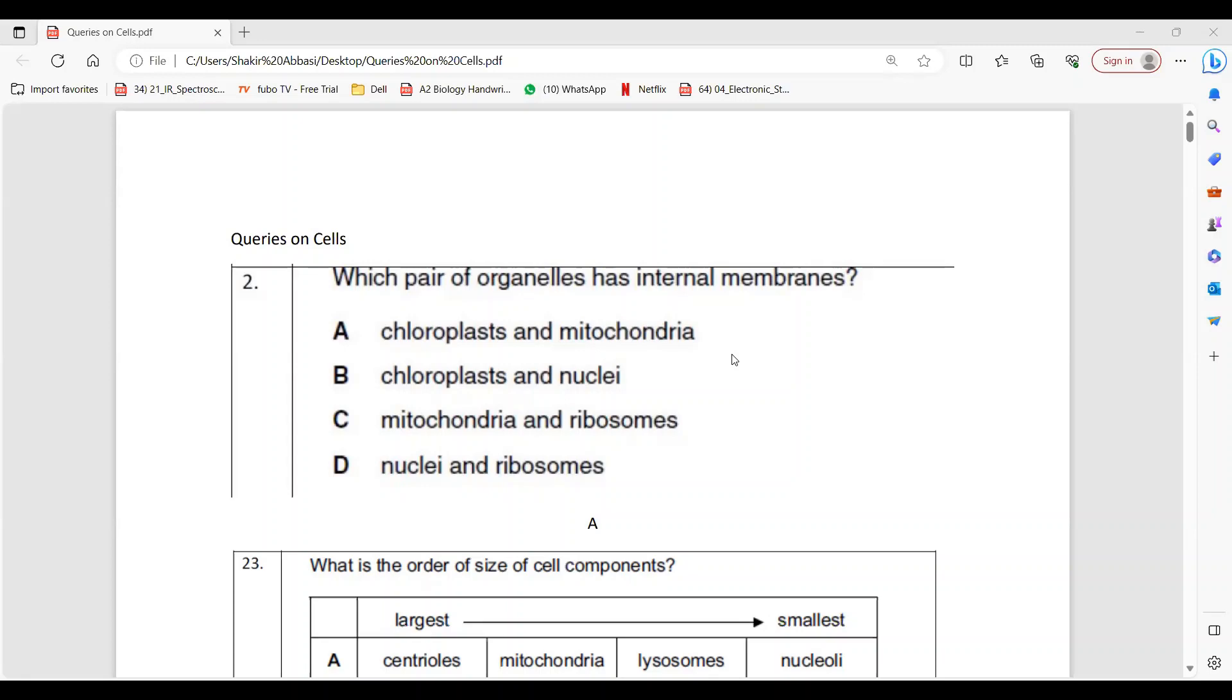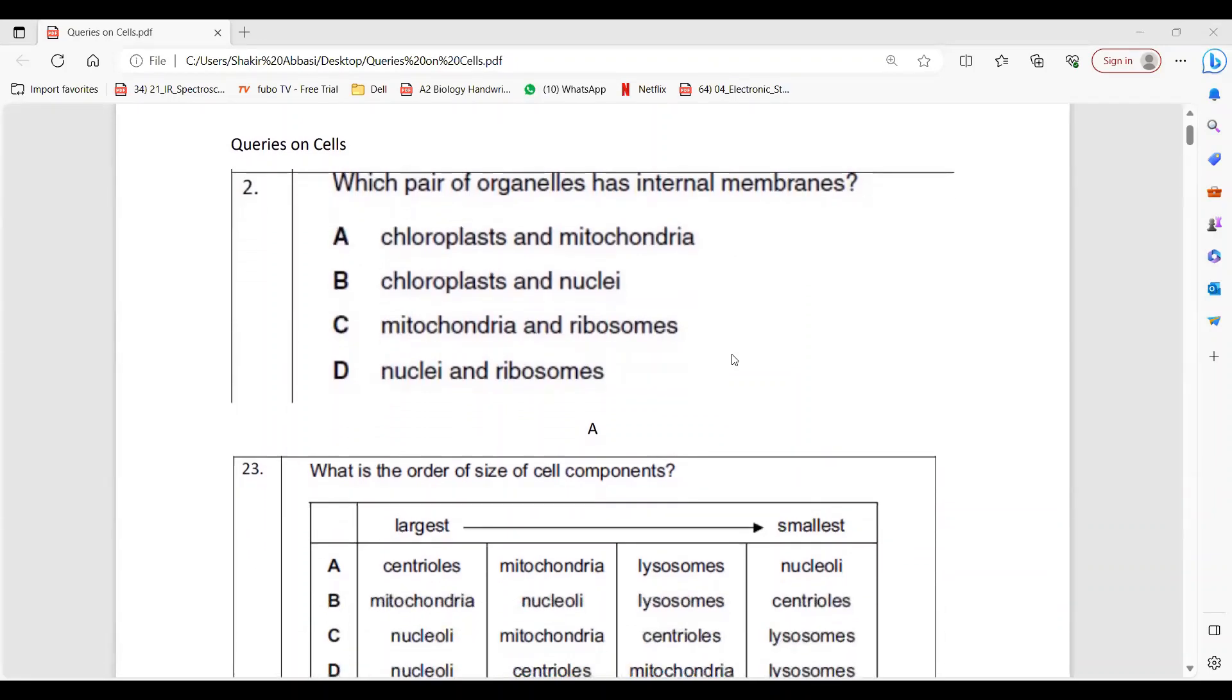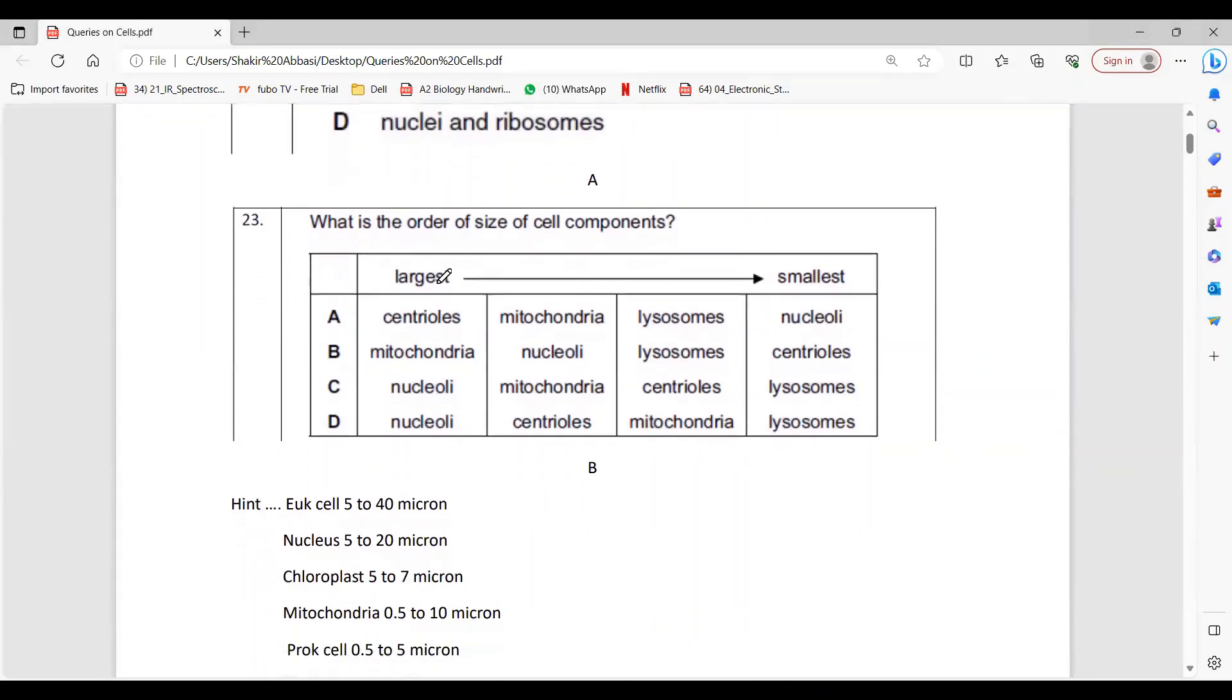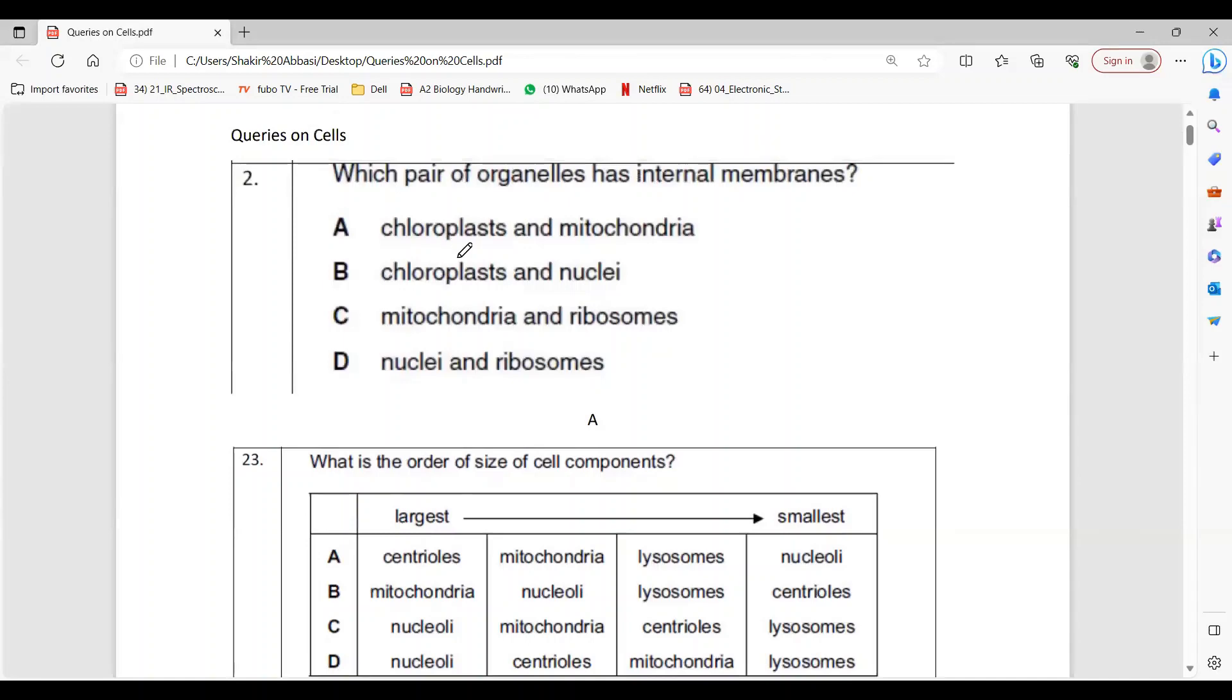The rest of the organelles have the membrane only. Ribosome is membrane-less, but nucleus has a membrane but no inner membrane system. But you know in chloroplast there's thylakoid, and mitochondria also have cristae.